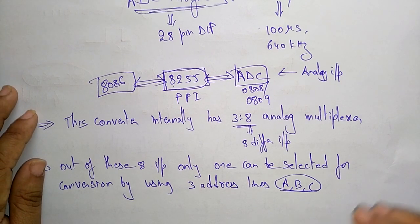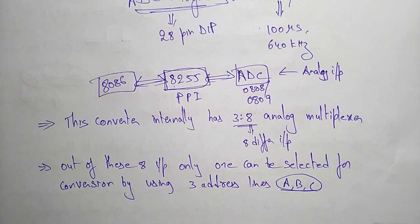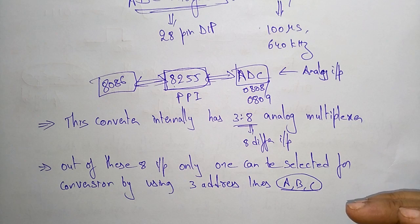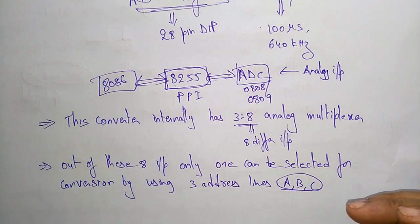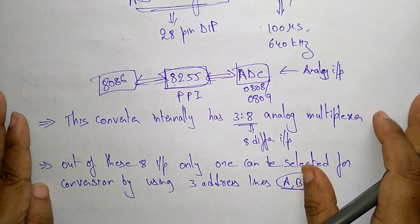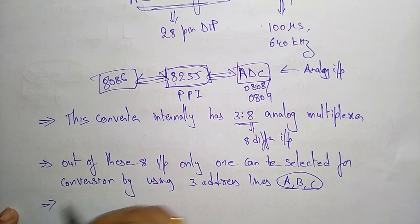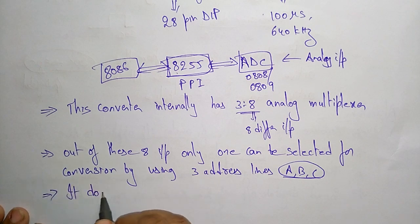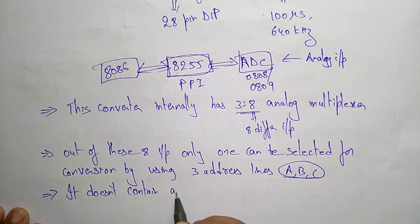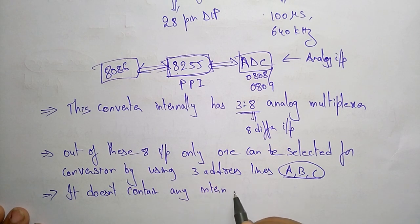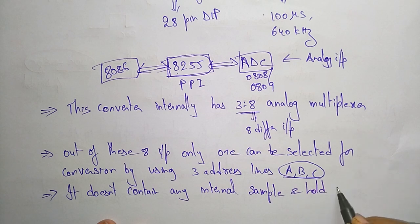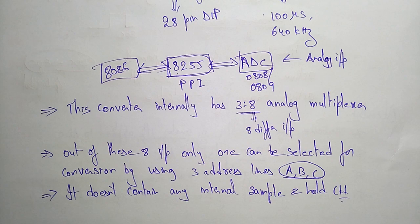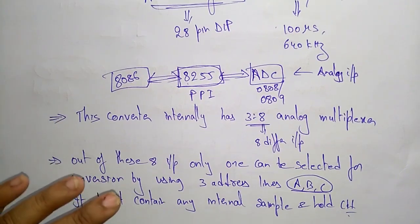There are unipolar A-to-D converters that are able to convert only positive analog input voltage to their digital equivalent. One important thing to remember is that this chip does not contain any internal sample and hold circuit.